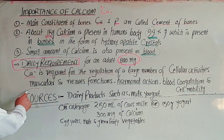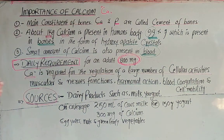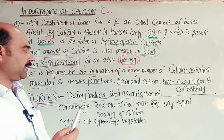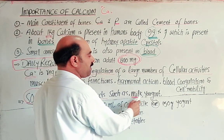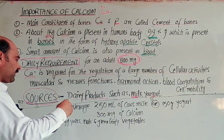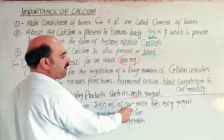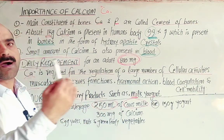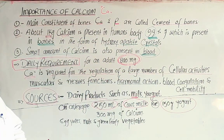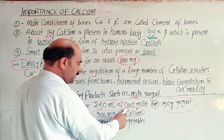Students, the daily requirement is 800 mg of calcium per day. The main sources from which we can obtain calcium are dairy products. Dairy products include milk, yogurt, and similar items. On average, if you consume 250 ml of cow's milk and 150 grams of yogurt, that provides approximately 300 milligrams of calcium each — satisfying a significant portion of your daily requirement.